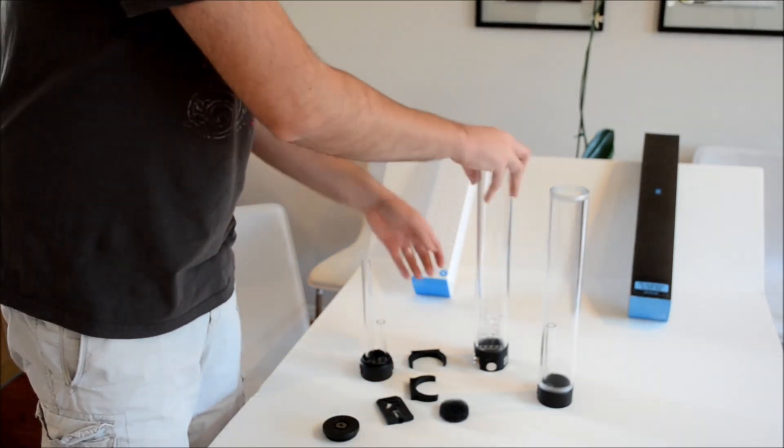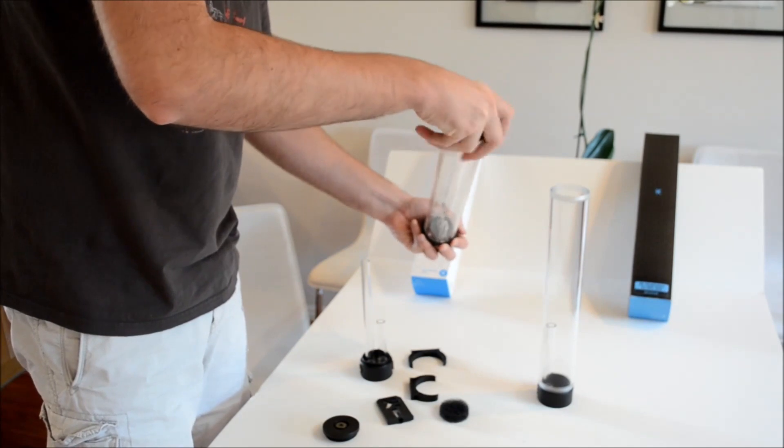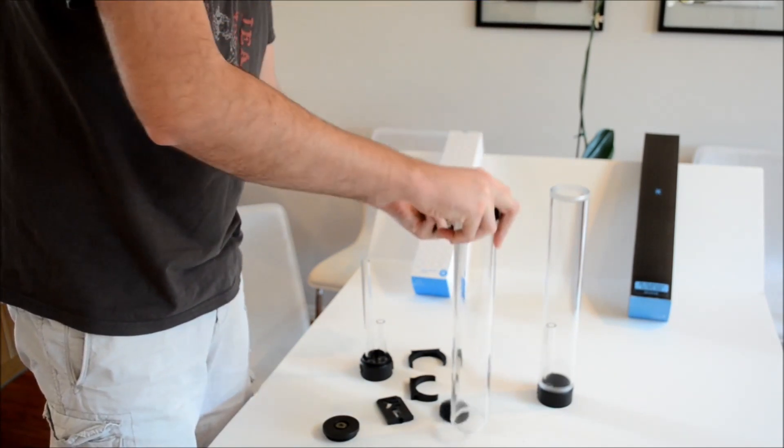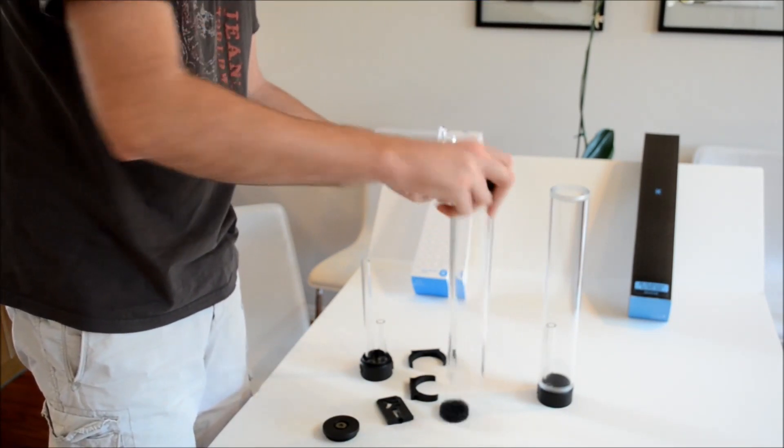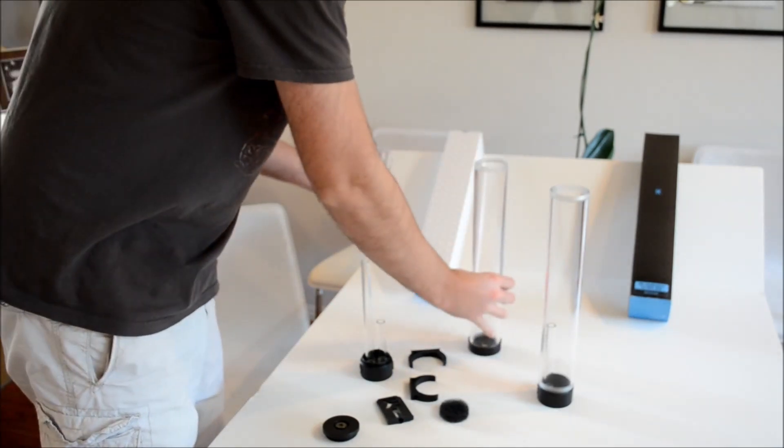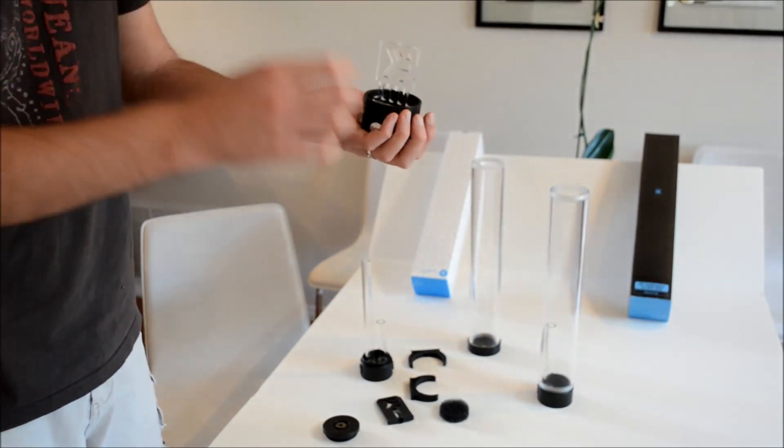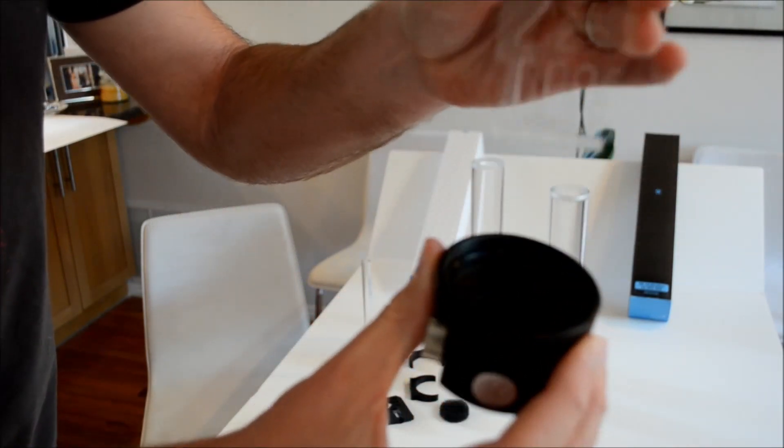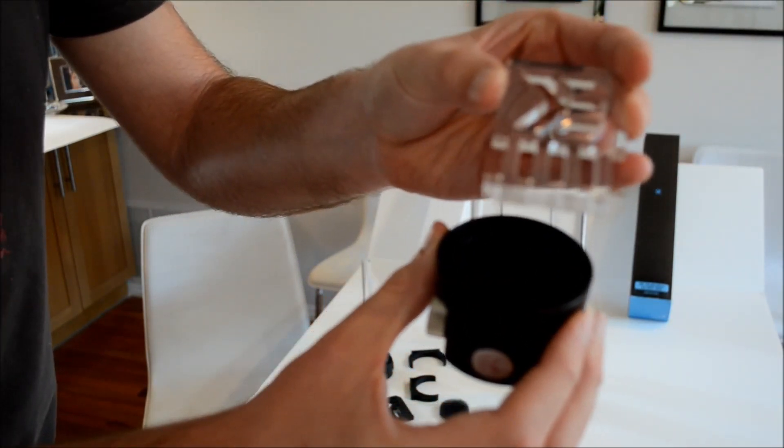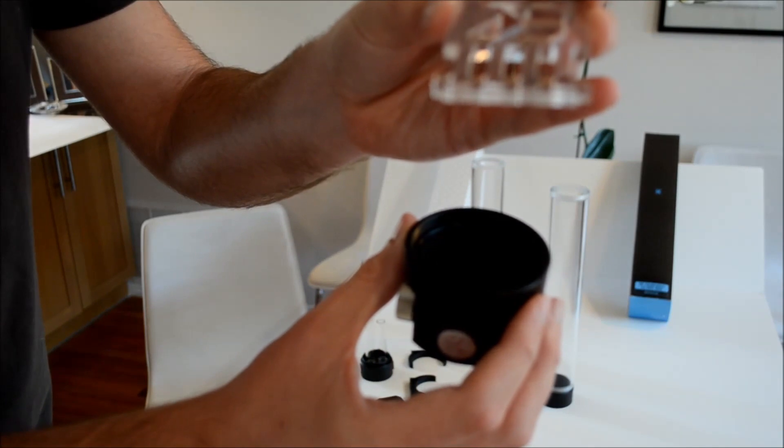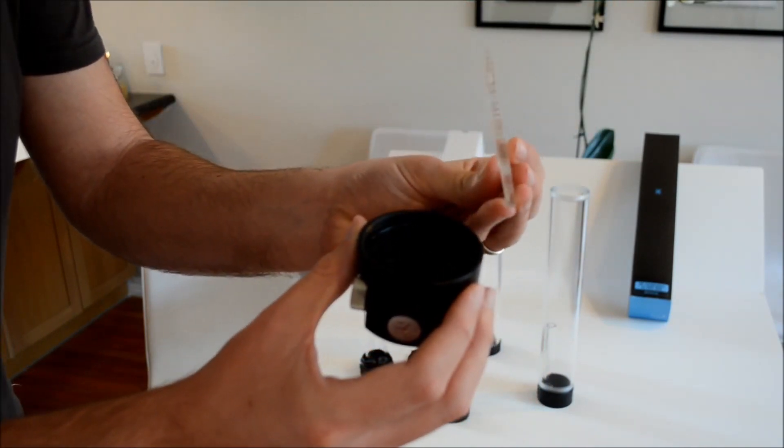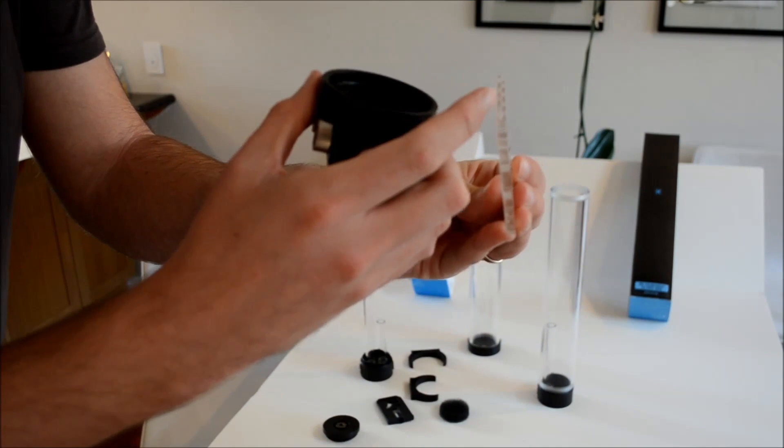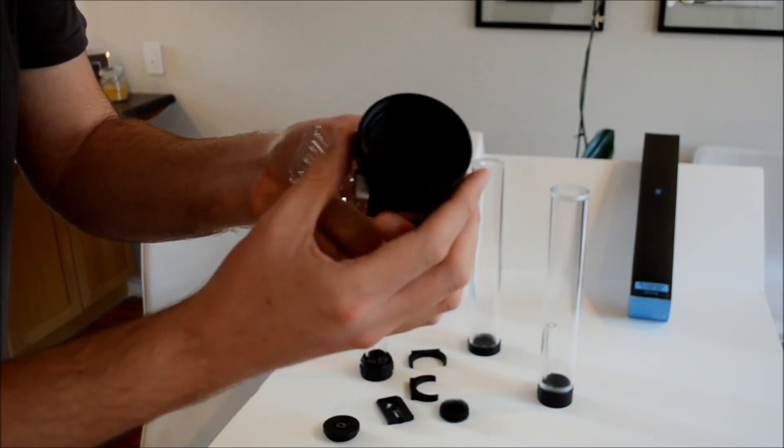One thing that did change with the anti-cyclone on the X3 is that it's no longer screwed down. On the X2 you have the option to screw it down. Here, you can see, it just pops right out.